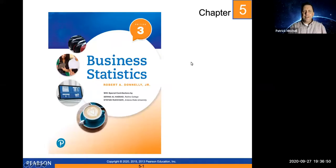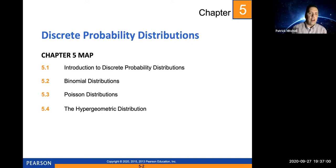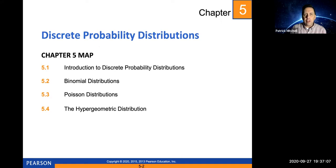Hi everybody, it's Professor Mitchell. We're starting a new chapter today, Chapter 5, on discrete probability distributions. We will actually just cover the first three sections of this chapter. We won't talk about the hypergeometric distribution. So let's start with Section 5.1, which is Introduction to Discrete Probability Distributions.